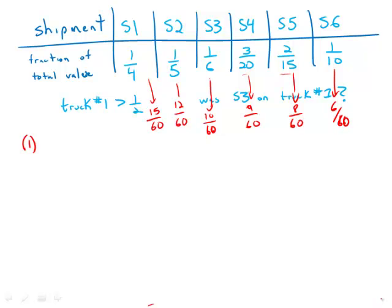So now we know, looking at statement number one, S2 and S4 are on the first truck. And so what that means is that we have 12 sixtieths plus 9 sixtieths, that's already 21 sixtieths.